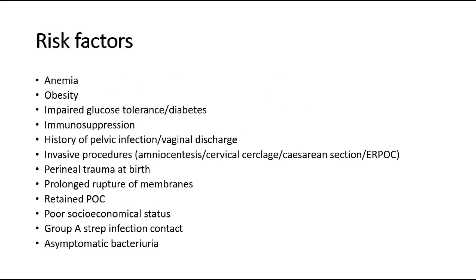The risk factors for sepsis include anemia, obesity, impaired glucose tolerance or diabetes, immunosuppression, history of pelvic infection or vaginal discharge, invasive procedures like amniocentesis, cervical cerclage, caesarean section, and ERPC. Also perineal trauma at birth, prolonged rupture of membranes, retained products of conception, poor socio-economic status, group B strep infection contact, and asymptomatic bacteriuria.